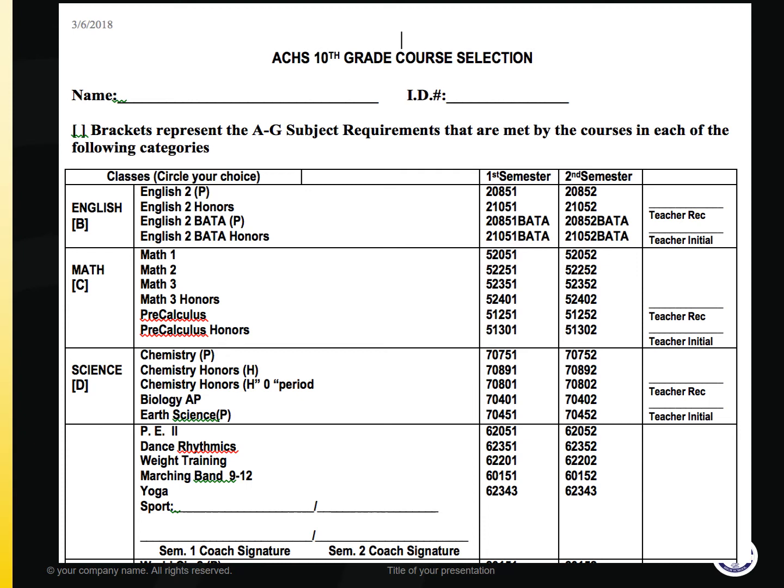Starting with the first category, English, you will select and circle one of the following: English 2 College Prep, English 2 Honors, English 2 BADA College Prep, or English 2 BADA Honors if you're enrolled in the Business Academy program.